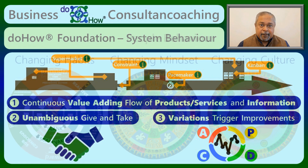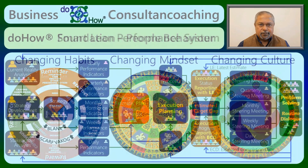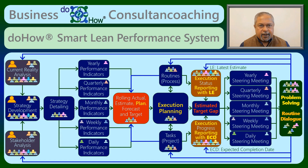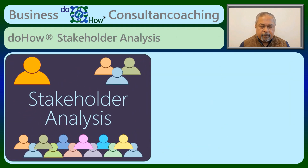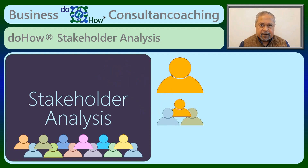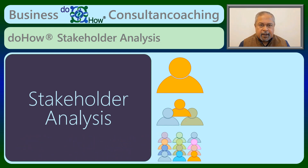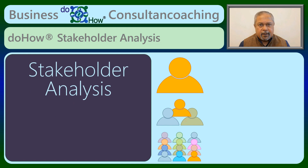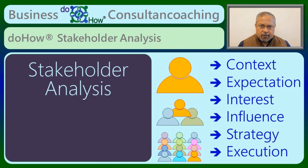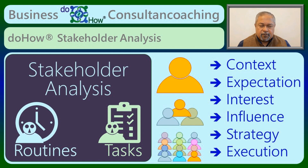System and people behaviour are the foundations of DoHow. The first round of stakeholder analysis is done by everyone individually for all the people that matter in their work and life, followed by teams of 2-4 in the second round wherein evidences become mandatory. The last round is the consensus round with the teams debating and discussing before arriving at a common understanding. During each of these rounds, stakeholder context, expectation, interest, influence, strategy and the consistency in executing the strategy for managing the stakeholder is analysed while adding routines or tasks for improving the execution.